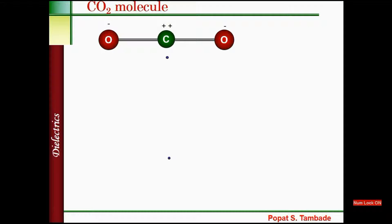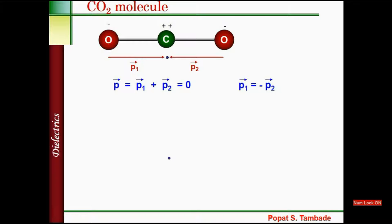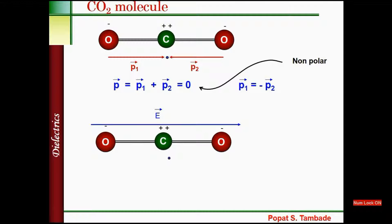Consider the CO2 molecule. In CO2, each O atom has negative charge and C has positive charge. We have two dipole moments P1 and P2. The net dipole moment P is equal to P1 plus P2 vectorially. Since P1 is equal to minus P2 — they are equal and opposite — the net dipole moment is zero. That is why this molecule is a non-polar molecule.